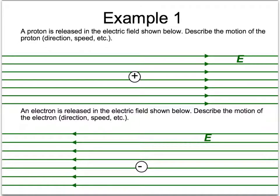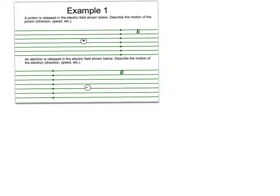There are also AP questions, either free response or potentially multiple choice, that will say, describe the motion of a charge in an electric field. Here are two such examples, and let me show you what some good answers will look like. The first example says a proton is released in the electric field shown below. Describe the motion of the proton, its direction, its speed, etc.